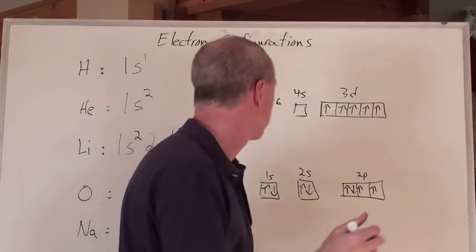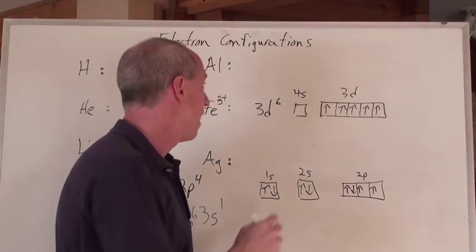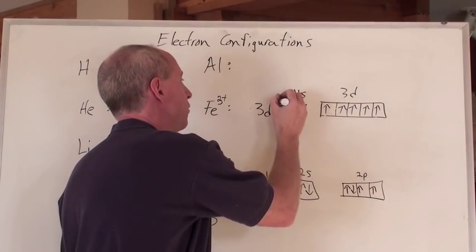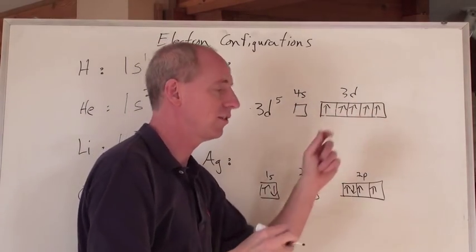And with a little bit more energy, you could easily remove that electron and give iron a 3 positive charge. And so that would become 3d5 as its outermost once you get rid of the 4s electrons and that one there.